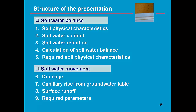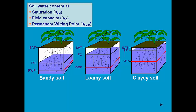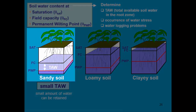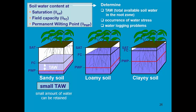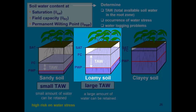To conclude, let's look at the required soil physical characteristics needed to calculate soil water retention and soil water balance: the soil water content at saturation, field capacity, and permanent wilting point. These determine the total available water in the root zone, the occurrence of water stress if soil water content is close to wilting point, and waterlogging problems if water content is close to saturation. In a sandy soil with low field capacity and permanent wilting point, total available water is rather small, so there is high risk of water stress if we do not irrigate frequently.